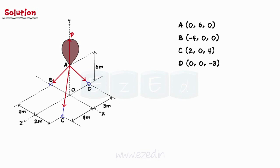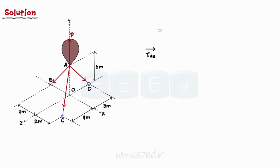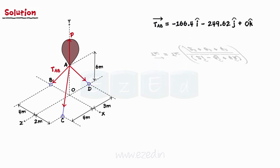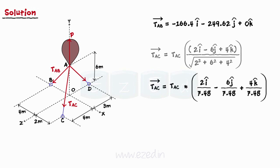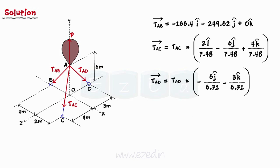Let the magnitude of force at A be P. Then P-bar is equal to P into j-hat. We will now express the tension forces in the cables in vector form. For T_AB, as we know the magnitude of the force and the coordinates of two points on the line of action of the force, the vector form will be as shown. Similarly, we can represent the other two forces in vector form in terms of their magnitudes respectively.